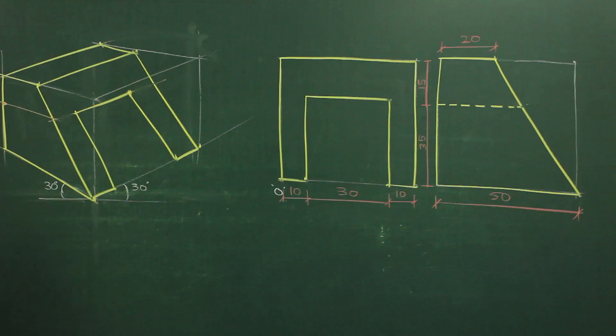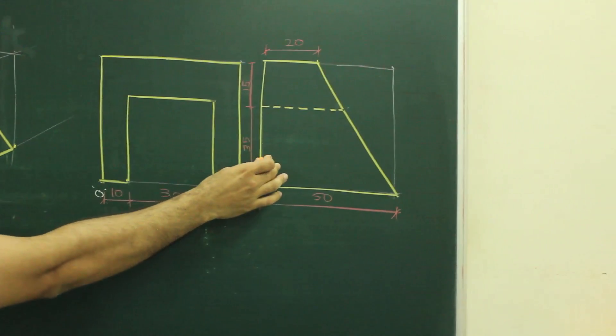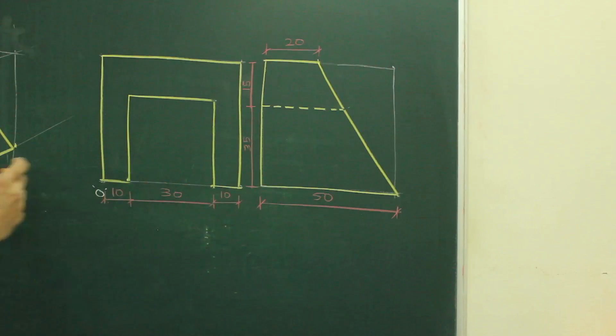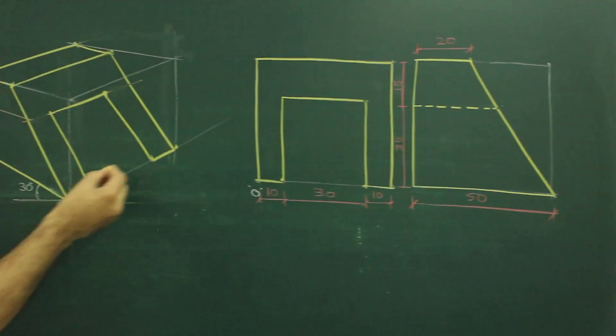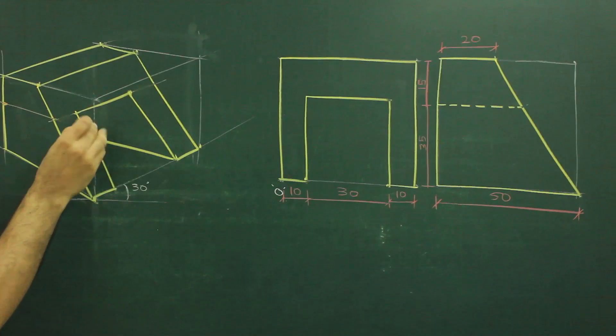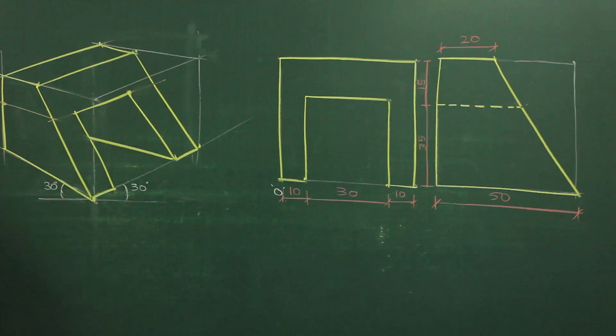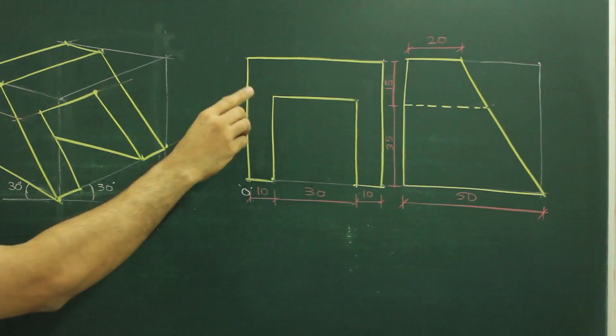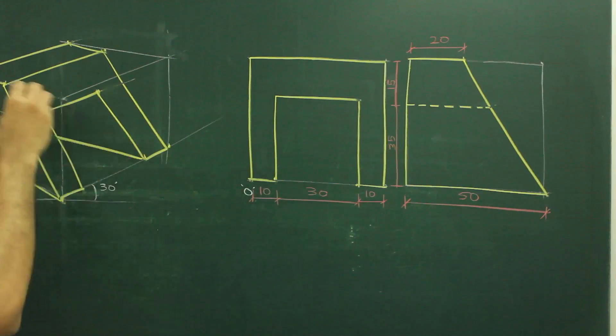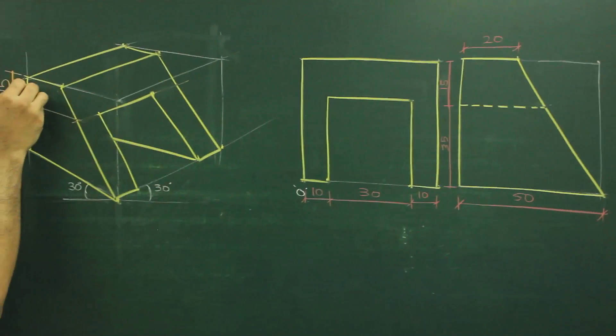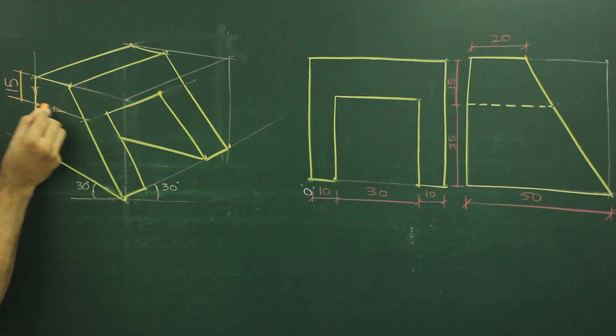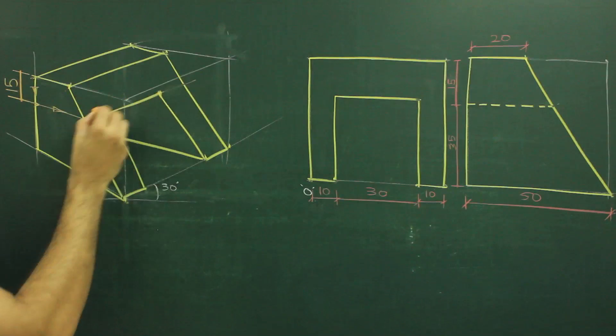And if you see side view, this is going through and through, line is going through and through. So here also we will draw this line going through and through. So in this, important part is, whenever you come across any dimension which is on the slope, which is on the inclined surface, you have to take down the main block, then you have to reach to that surface, and then you have to draw.